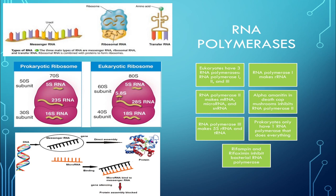A likely test question: they could point to a ribosome and ask which RNA polymerase was most likely involved in the production of the components of this organelle. The answer would be RNA polymerase 1, because it's involved in making rRNA, which makes up ribosomes.